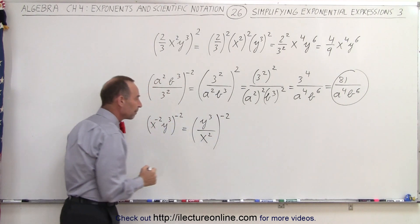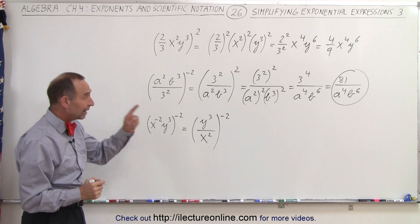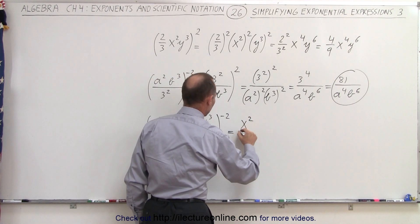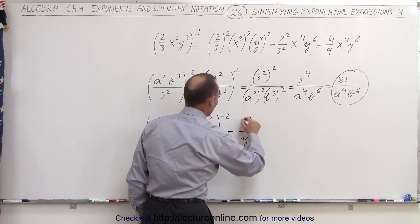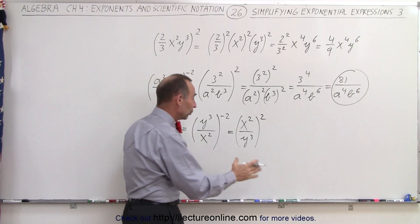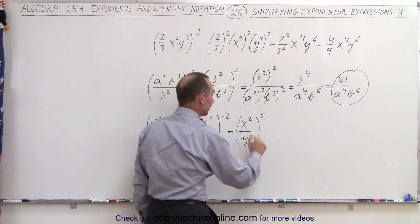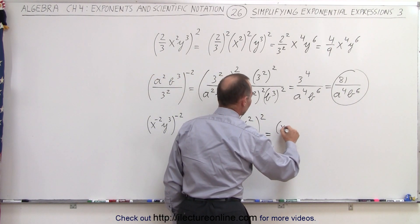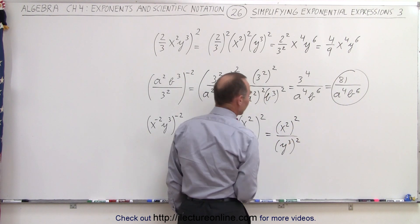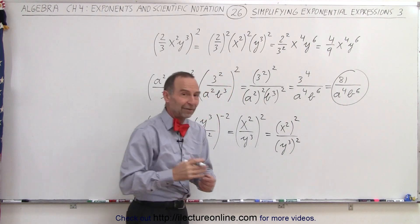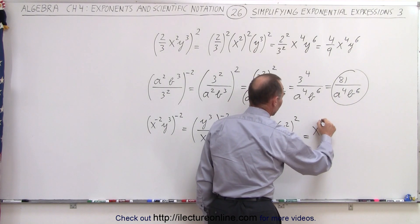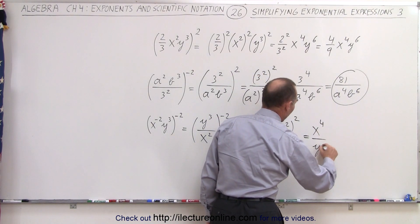We still have the negative 2 on the outside. We can get rid of that negative by flipping the fraction over, so this equals x squared divided by y cubed, raised to the positive 2 power. Now we apply that positive exponent to both numerator and denominator: x squared squared divided by y cubed squared. Using the rule that an exponent raised to an exponent means we multiply, this equals x to the fourth divided by y to the sixth.